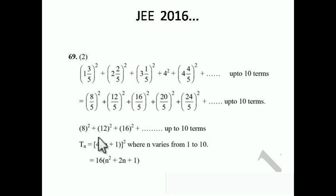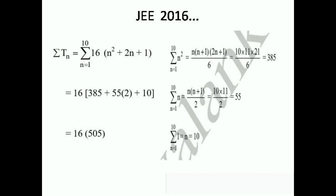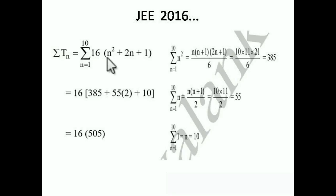Now we apply summation. Σtₙ = Σ from n=1 to 10 of 16(n² + 2n + 1). Taking 16 as constant outside, this becomes 16 times [Σn² + 2·Σn + Σ1], all from n=1 to 10.